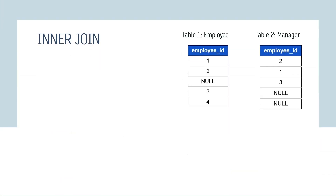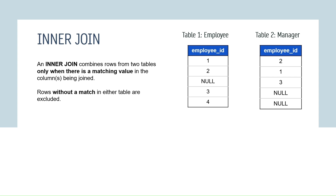Let's first perform the inner join. In the case of inner join, it combines rows from two tables only when there is a matching value in the columns being joined. Rows without a match in either table are excluded — meaning it will only return rows from those two tables where there is exactly a matching value in the columns.